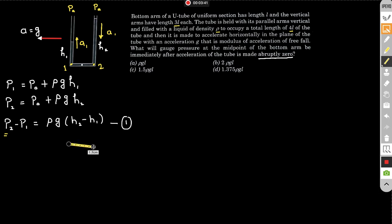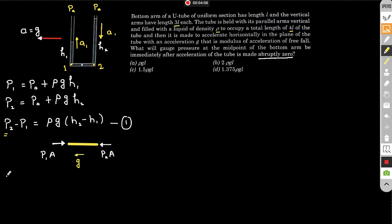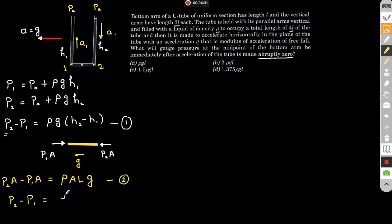Taking a cross-section of the horizontal length: the left face experiences force p1·A and the right face p2·A. Applying Newton's second law — the tube accelerates with acceleration g — the net force is p2·A − p1·A = mass × acceleration = ρ·A·l·g. So p2 − p1 = ρgl. This is equation 2.